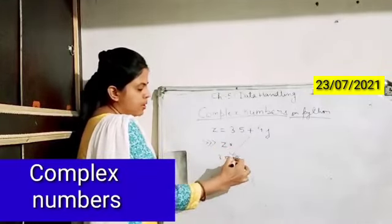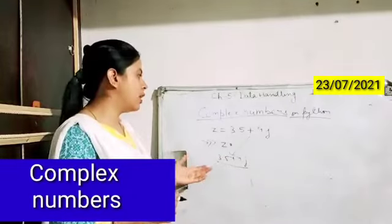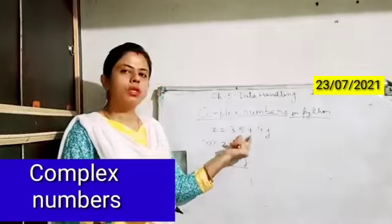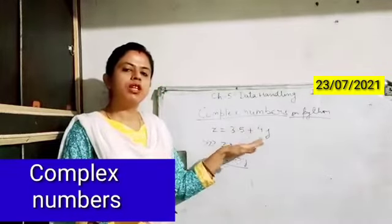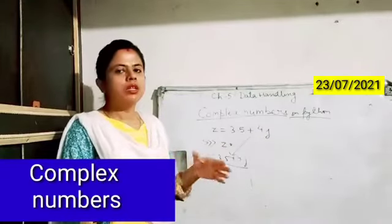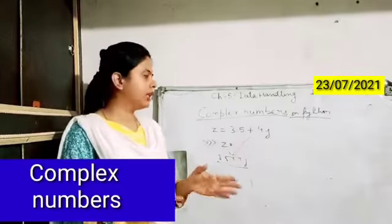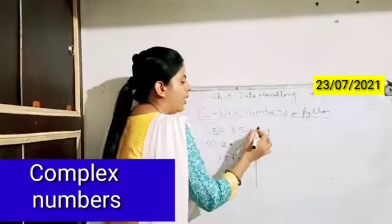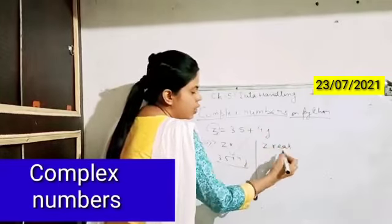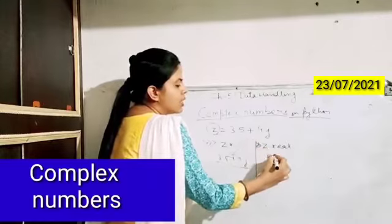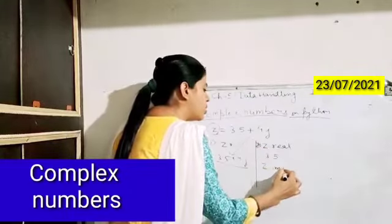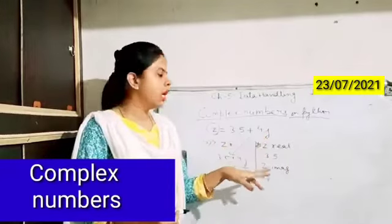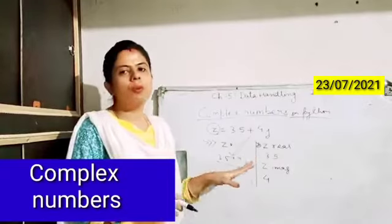Python also has different keywords to get the output split into two parts — we can print the real and imaginary parts separately. If z holds the whole value, I write z.real and it will give you the answer 3.5. If I write z.imag it will give you the answer 4, because 4 is the number representing the imaginary part and 3.5 is the real number. This is how complex numbers are represented in Python using j instead of i.